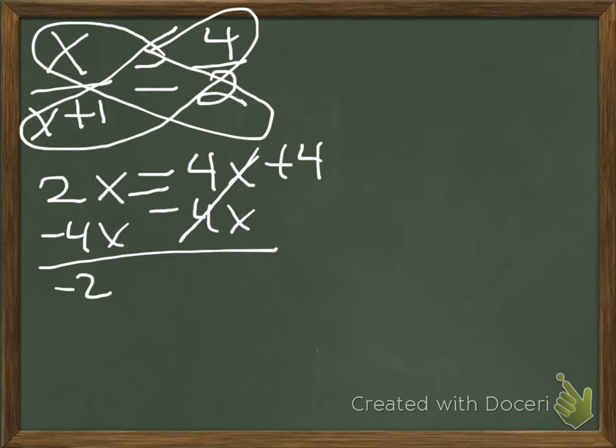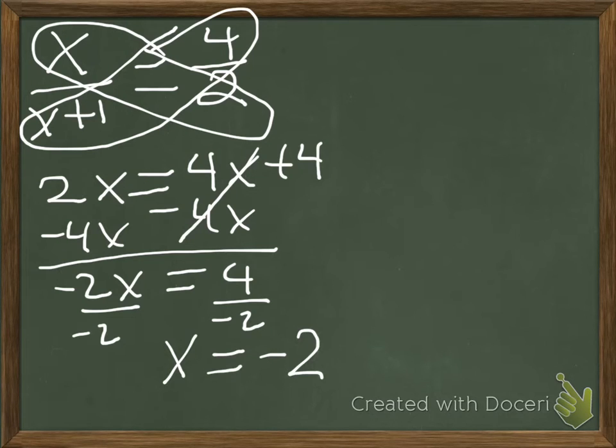Solo quedamos con negativo 2x igual a 4. Lo dividimos a negativo 2. Y como estamos dividiendo con negativo 2, la respuesta va a ser x igual a negativo 2. So, esta es la respuesta.